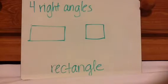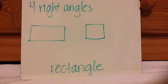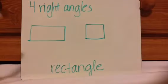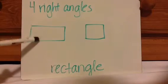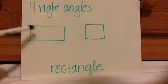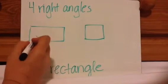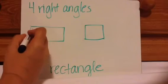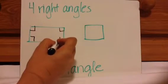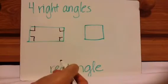Next one is a rectangle. The rectangle has just one rule, and that is that it has four right angles. I remember when I was in elementary school, this is what I thought of as a rectangle. And yes, it is a rectangle — there are four right angles: here, here, here, and here.